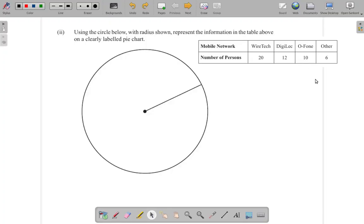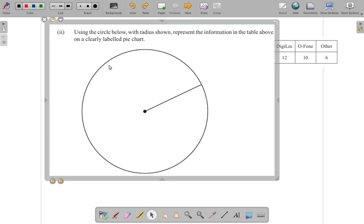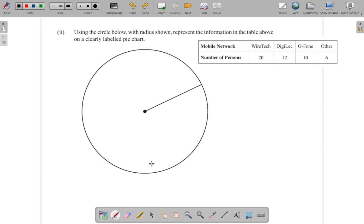Part two says: using the circle below with radius shown, represent the information in the table above in a clearly labeled pie chart. Let's see what's going on here. We have the table which I copied and placed here.